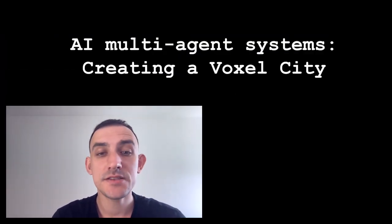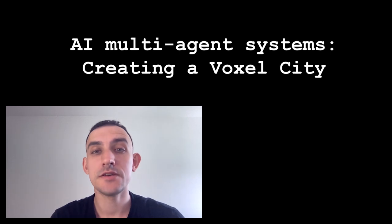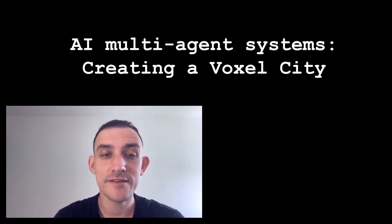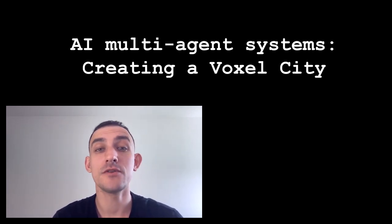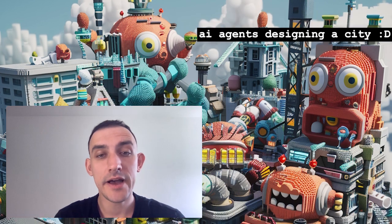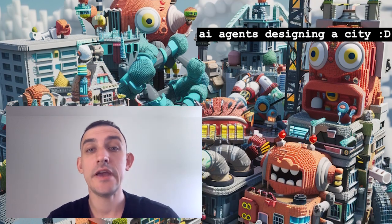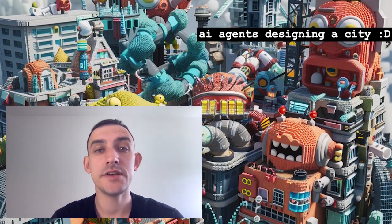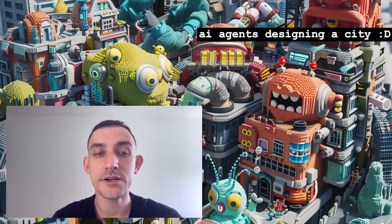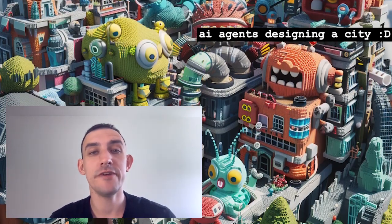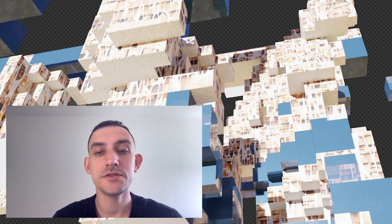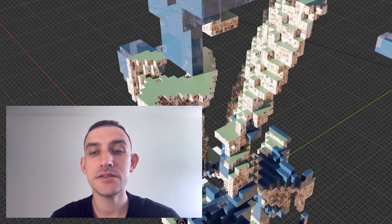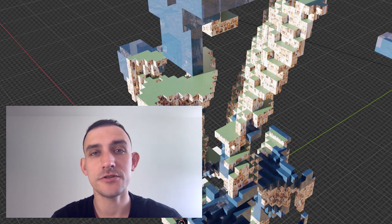Multi-agent AI systems means a group of smart interactive elements working together to reach shared goals. Unlike single AIs, multi-agent AI spreads intelligence across separated parts that collaborate to find solutions. In this workshop, we'll explore the potential of multi-agent AI systems in architectural design.